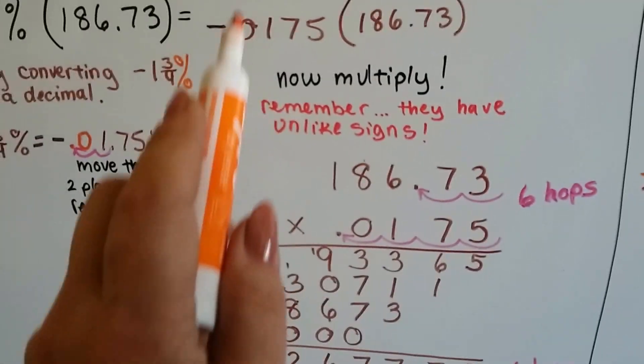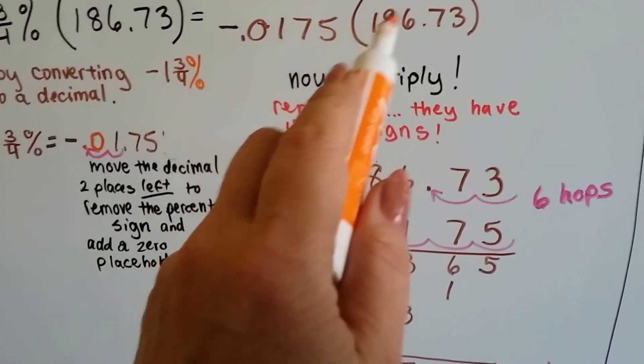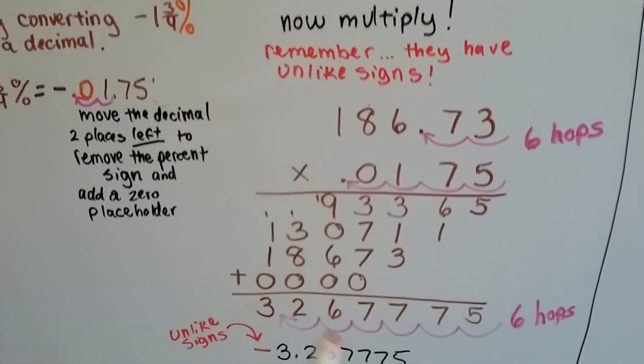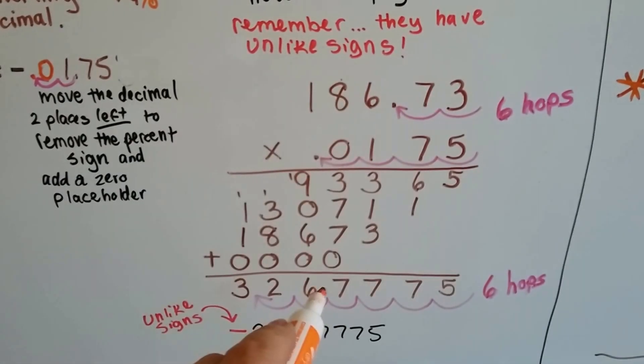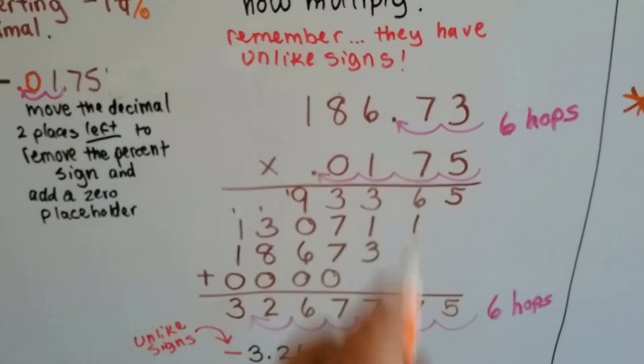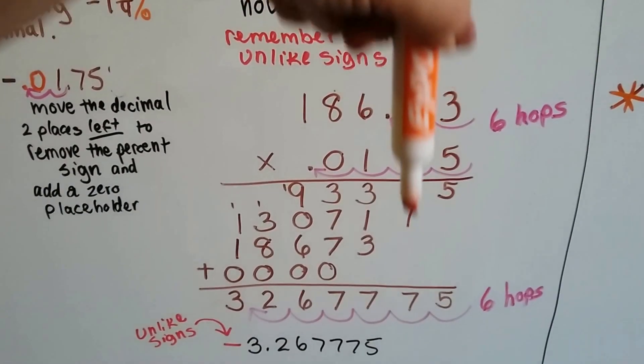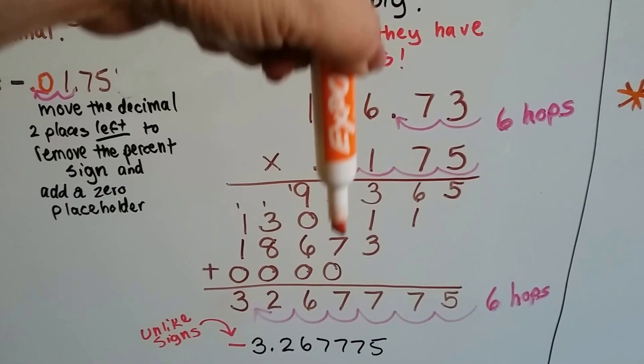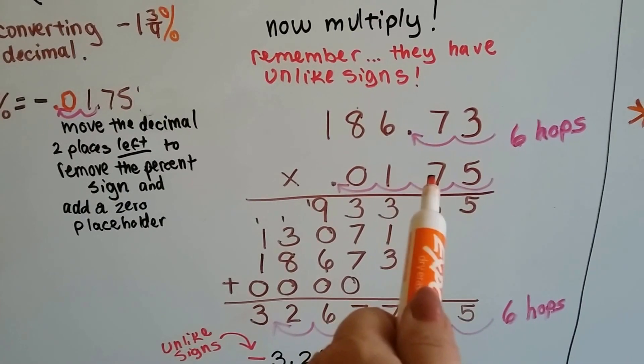And just remember that they have unlike signs, so that's going to be a negative answer. Alright, so we do our multiplication. We watch our place values. We make sure that the numbers are coming straight down so we don't add the wrong thing. And we keep our place values as we multiply.